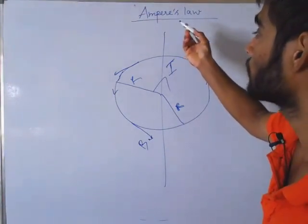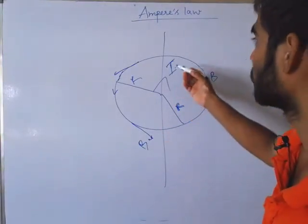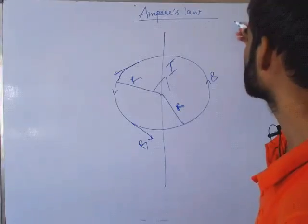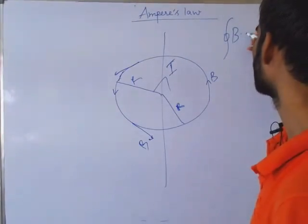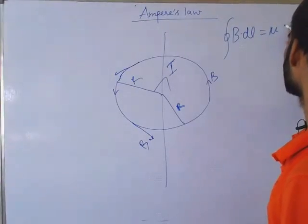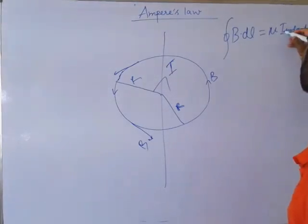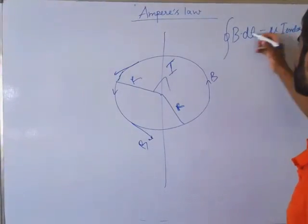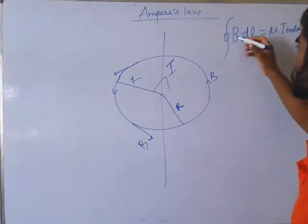Ampere's law gives the relation between this source and this magnetic field. The relation is like this: closed integral B dot dL is equals to mu I enclosed. This I enclosed is the source, and this is the magnetic field produced by this source.